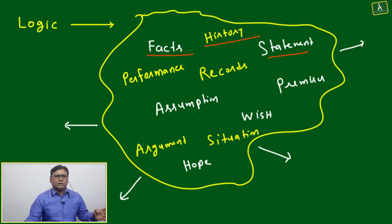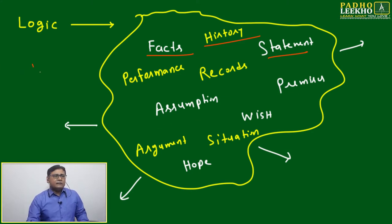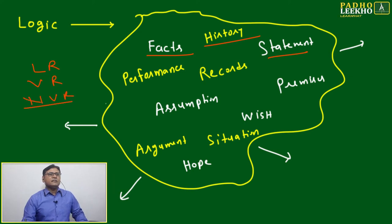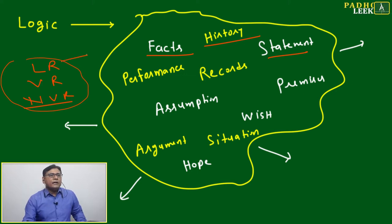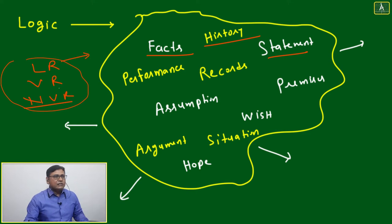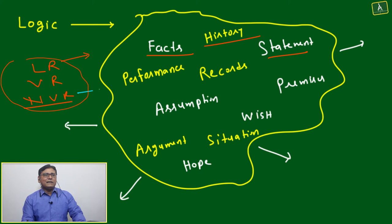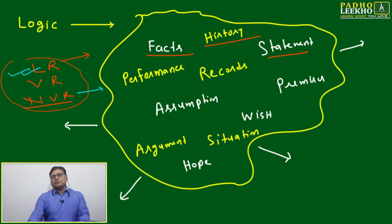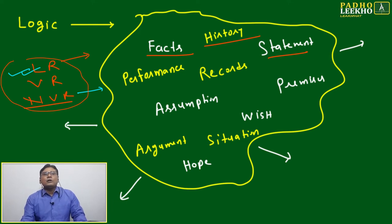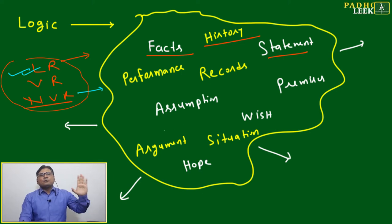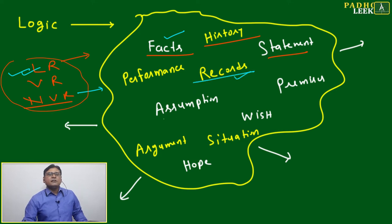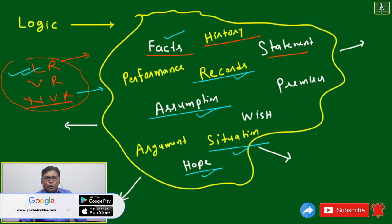Logical reasoning, verbal reasoning, and non-verbal reasoning — LR, VR, and NVR — are the three major categories of reasoning-based questions. For CAT, verbal reasoning has only a few types of questions, and non-verbal reasoning is not asked at all in CAT; it is mainly asked in bank PO exams. Our main concern is logical reasoning, which is so unpredictable because we are not always comfortable with what logic is — just as we used facts, records, assumptions, situations, hopes, and wishes together to form the logic 'India will win the Cricket World Cup 2023.'